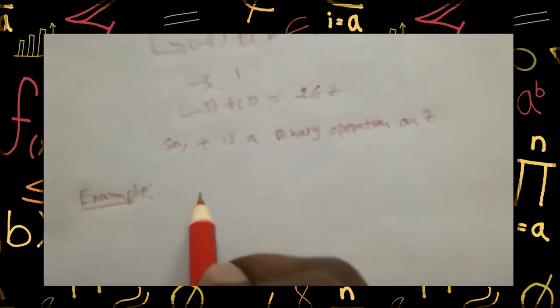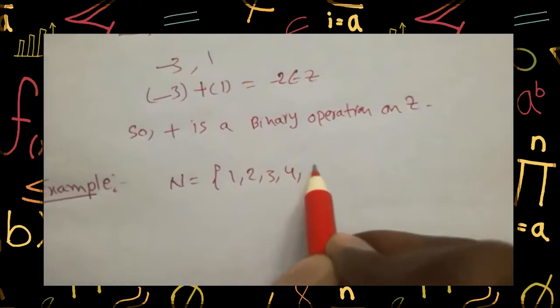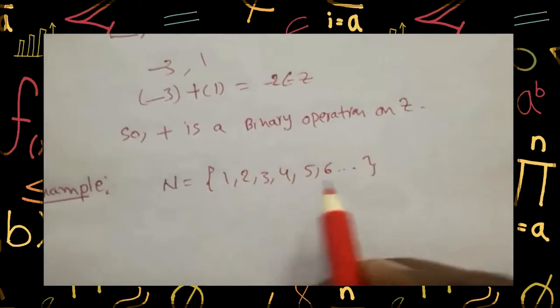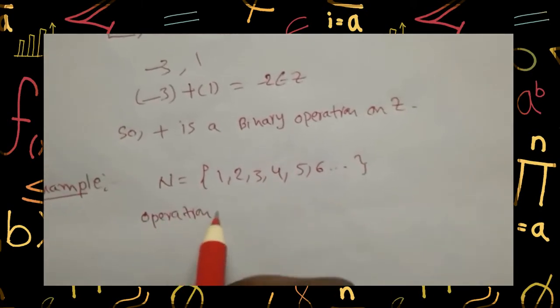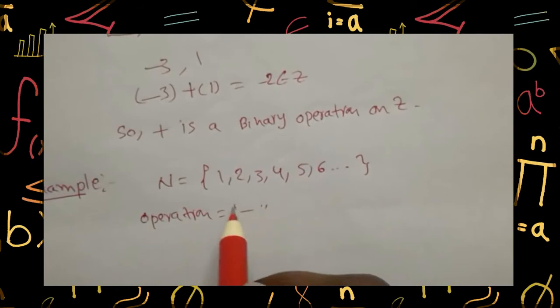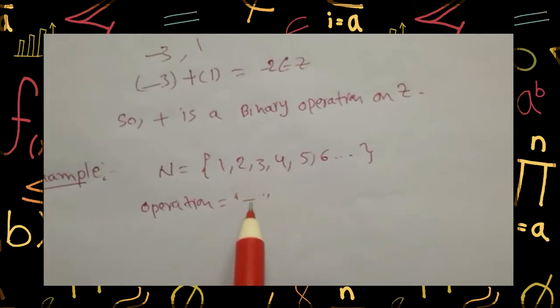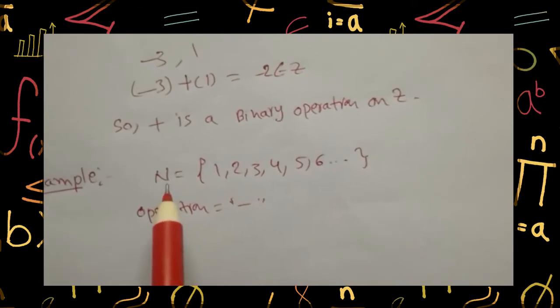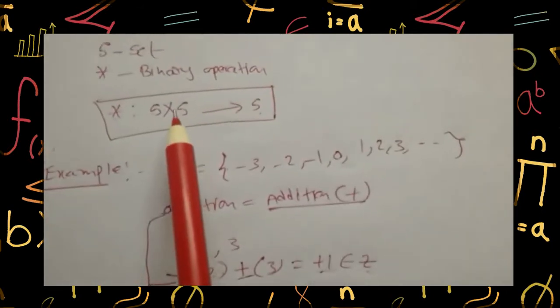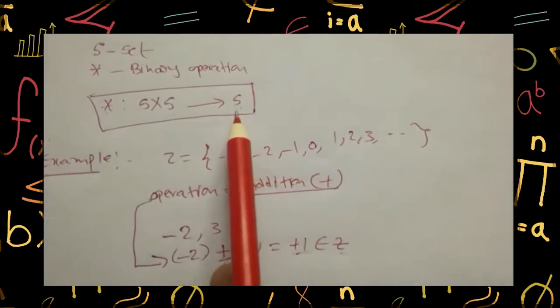Now let us discuss one more example which is not a binary operation. I am taking the set of natural numbers N, that is one, two, three, four, five, six, and so on. I am taking the operation minus. Now I am checking: is subtraction a binary operation on N, that is on natural numbers, or not? The definition of binary operation simply says: if you perform an operation on two elements of S, the result element should be in that set.